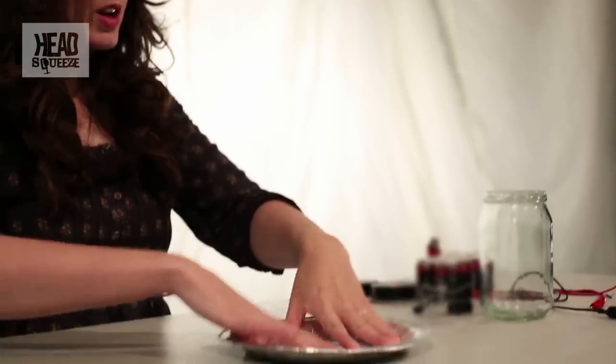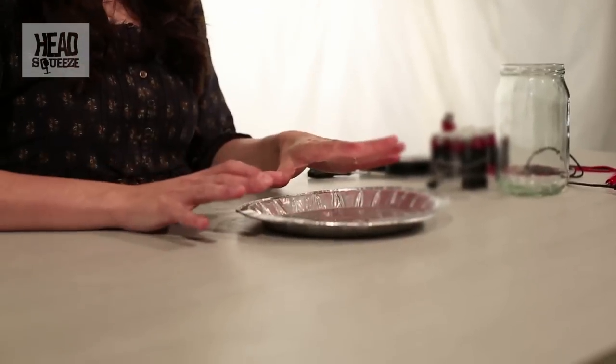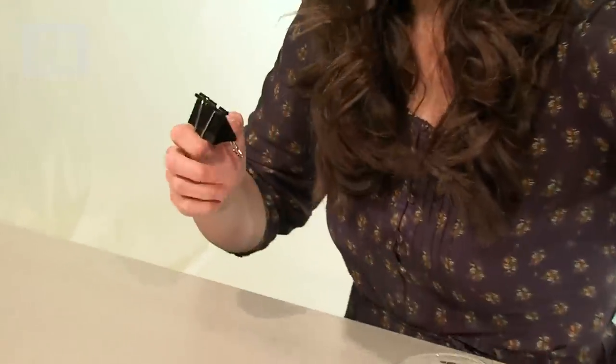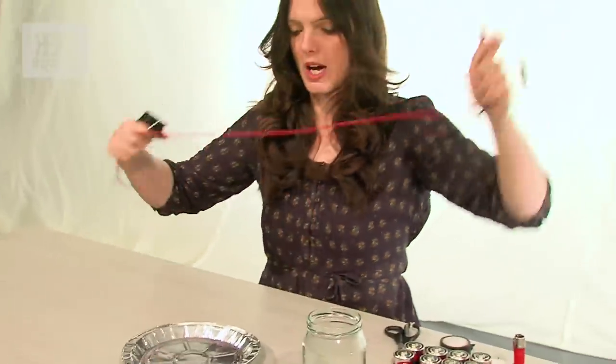So here's what you do. Take the pie dish and pop it just there. That's just to make sure that you don't burn the table, which is always a good thing. Then take your bulldog clip and your wires.